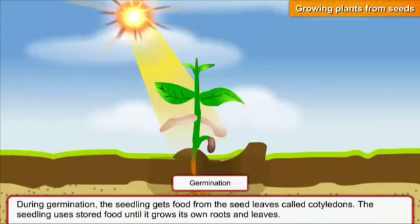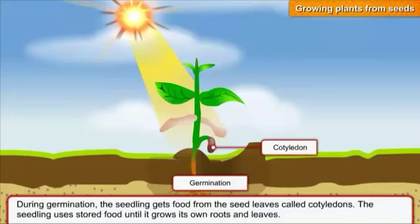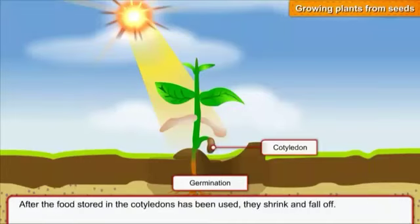During germination, the seedling gets food from the seed leaves called cotyledons. The seedling uses this stored food until it grows its own roots and leaves. After the food stored in the cotyledons has been used, they shrink and fall off.